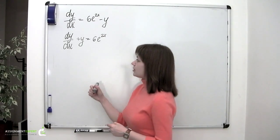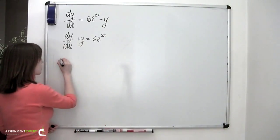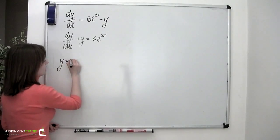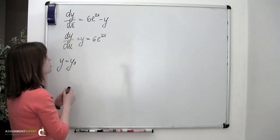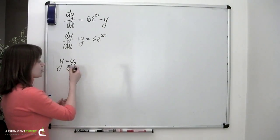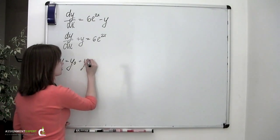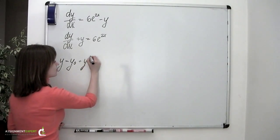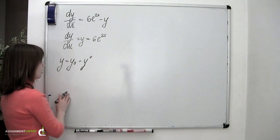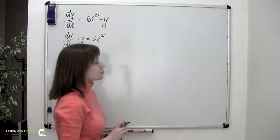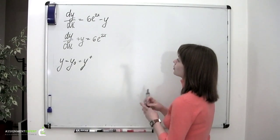It is known that the solution to such an equation is found as a sum of a solution of the corresponding homogeneous differential equation y₀, and the particular solution of the initial inhomogeneous differential equation y*. So let's find them, and let's start with solving the homogeneous differential equation corresponding to the one we have.